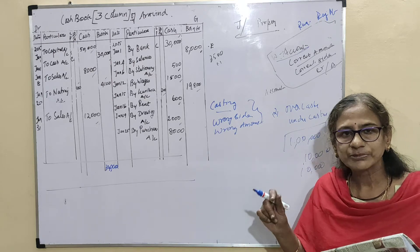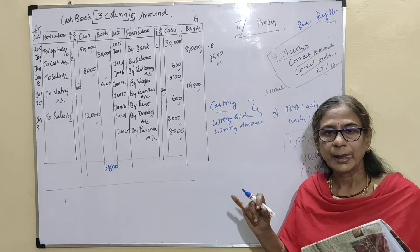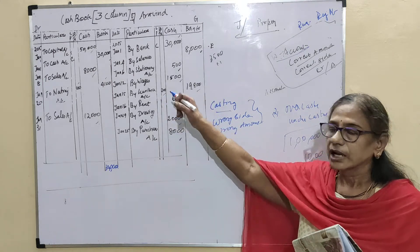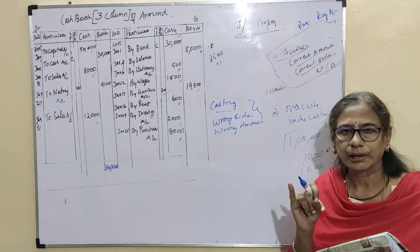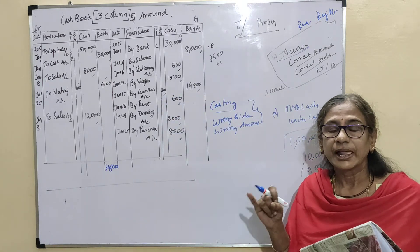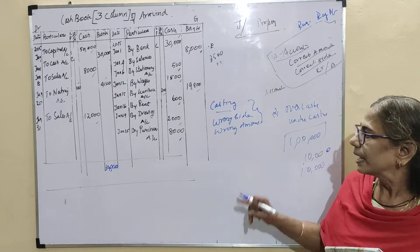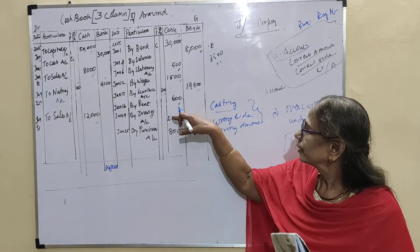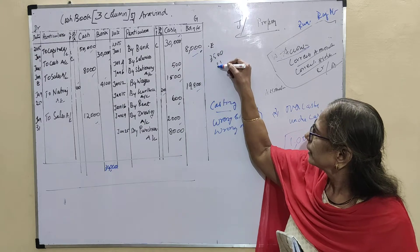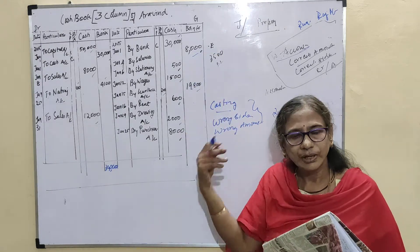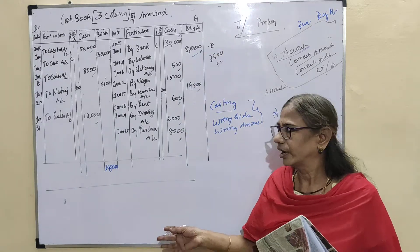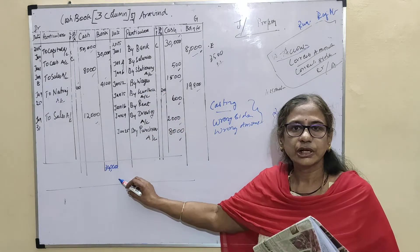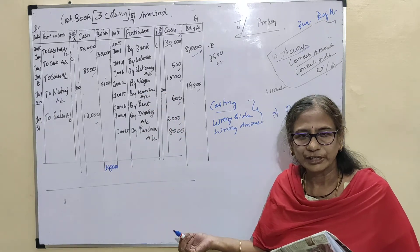There are two types of error of complete omission. Here we have seen that the car is not entered in journal proper — that is complete omission. It will not affect the trial balance. And entering the wrong amount in the original book will not be identified, and totalling in the original book also sometimes may not be identified.